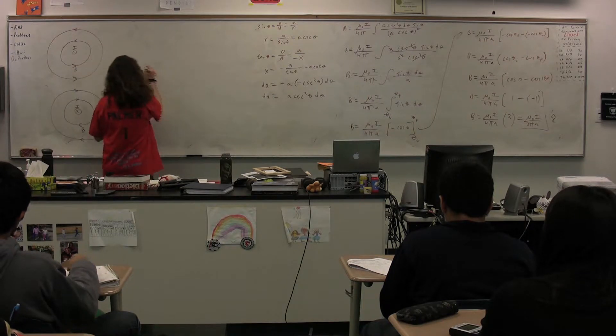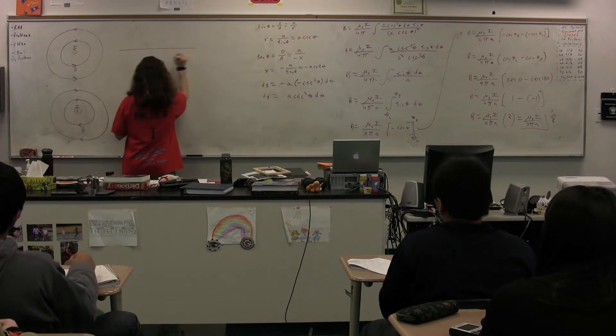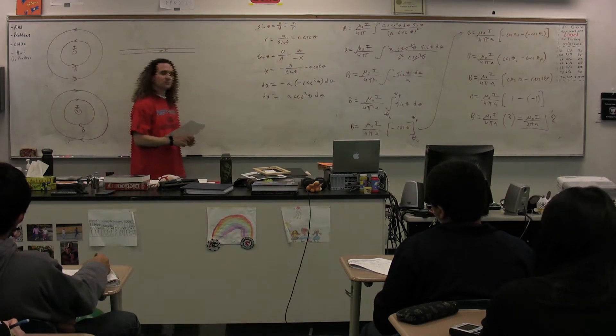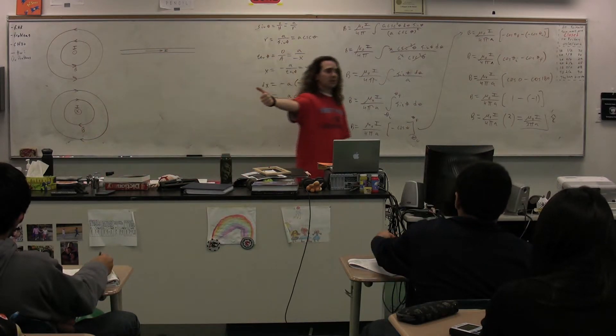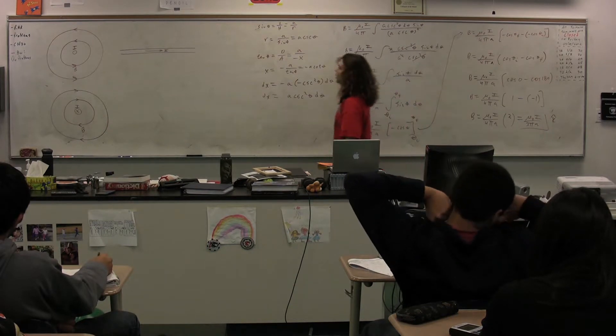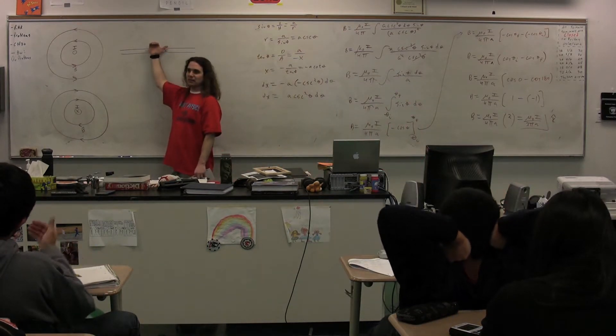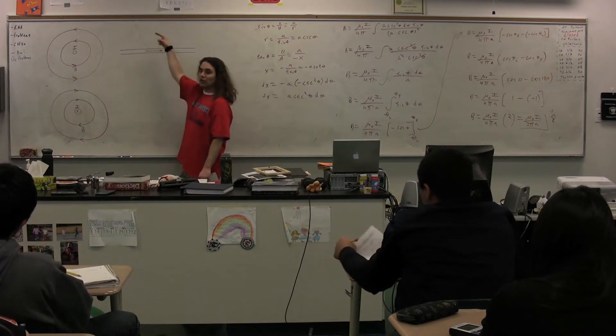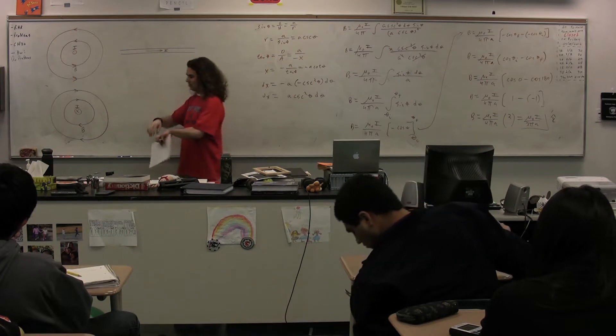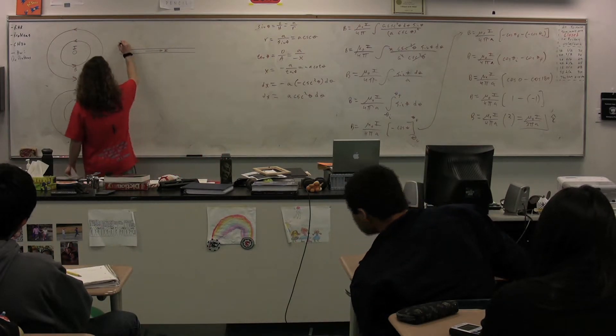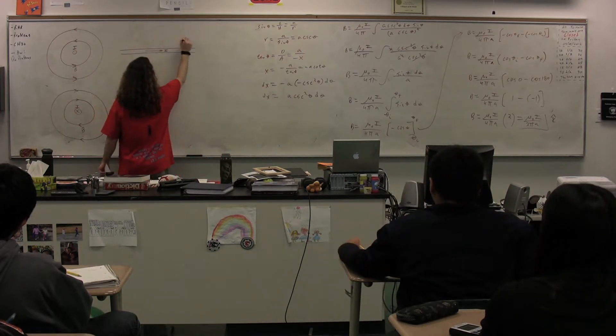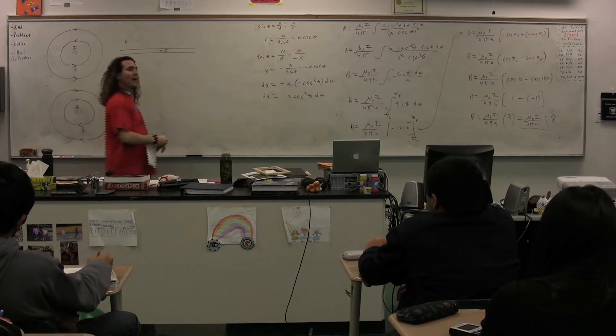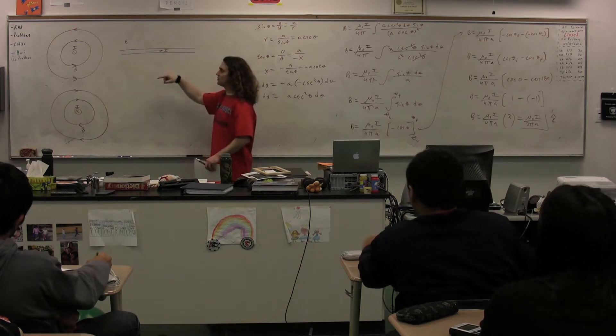I also want to make sure we look at it from this perspective, which is if we have a current carrying wire that's carrying current to the right, we point our thumb in the direction of the current. We curl our fingers in the direction of the magnetic field. Notice that that means that above the wire, the magnetic field is going to be out of the page, and the magnetic field below the wire is going to be into the board.